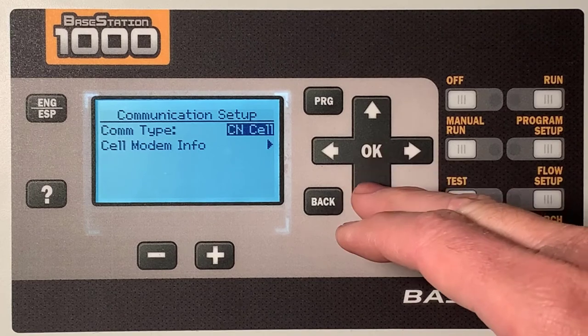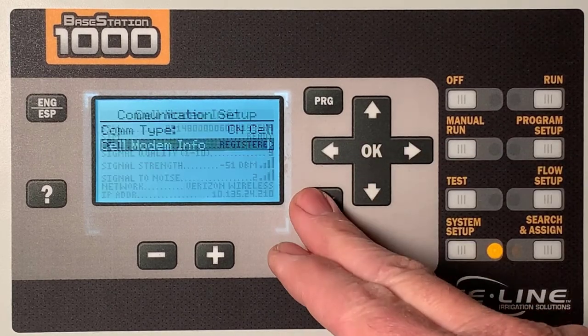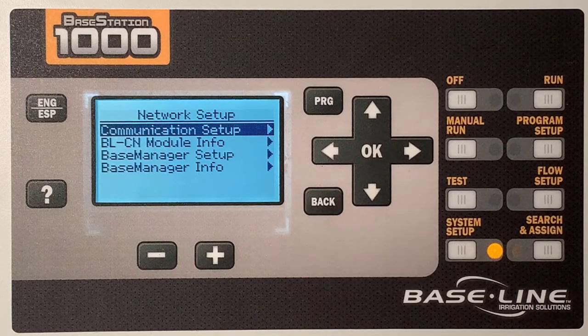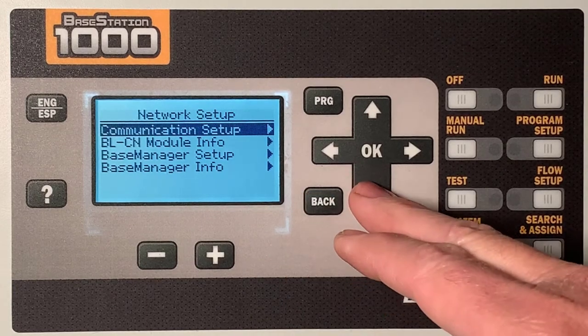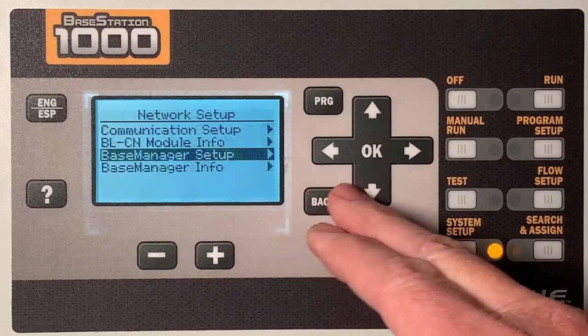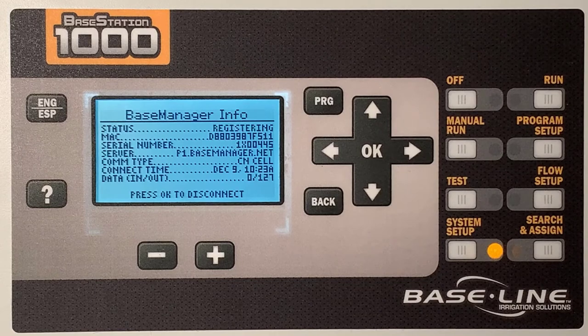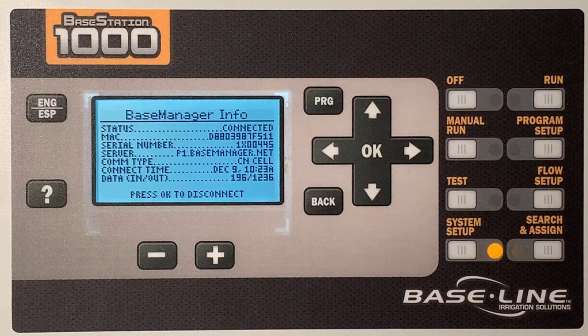Under Cell Modem Info, we can see that the modem is registered and ready. Check on the Base Manager connection by pressing Back until you find Base Manager Setup, where we can see that Base Manager is enabled. Back up to Base Manager Info and press OK to connect. After a moment, you can see we're connected to Base Manager.